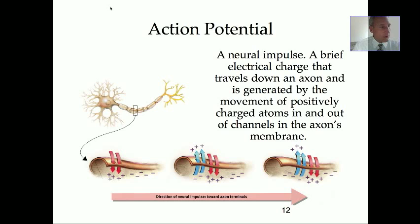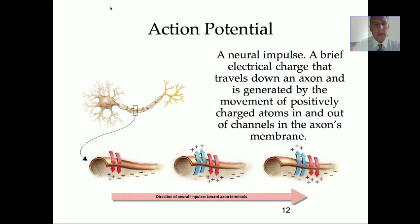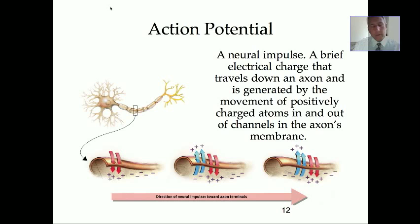You might ask: what influences whether or not that electrical charge takes place? That is based on whether or not, through the communication from the previous neurons and other neurons around that particular neuron, the neuron reaches a threshold — a certain level that prompts the neural impulse to take place. At the end of the neural impulse, the electrical impulse travels to the axon terminals and releases chemicals. So it gets information whether or not it should have a neural impulse from chemicals from surrounding neurons, and if it does, it releases chemicals at the other end.